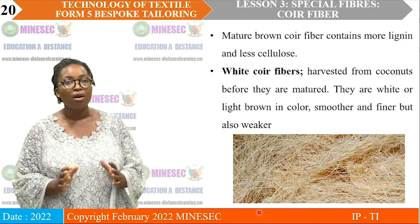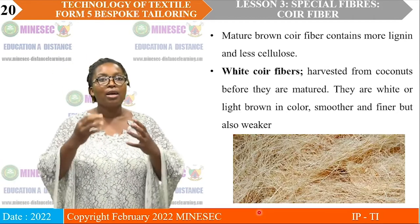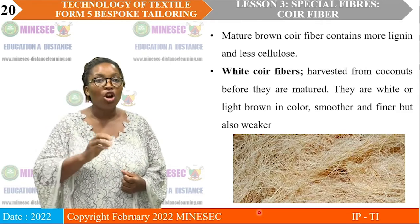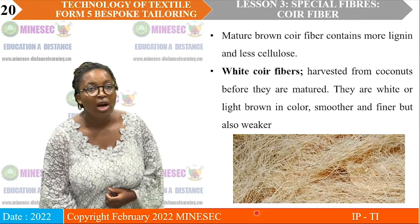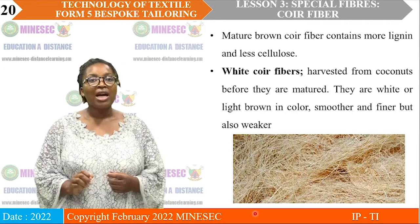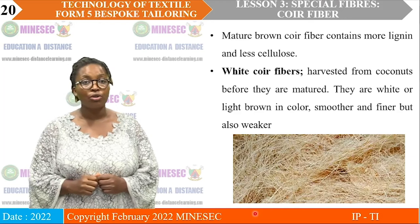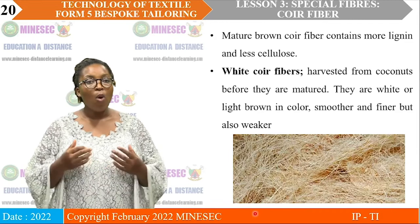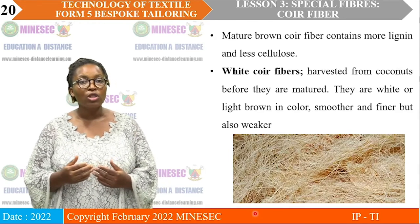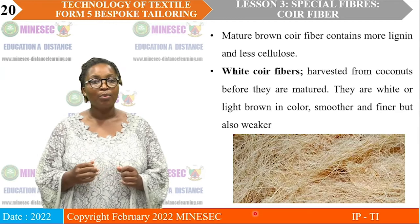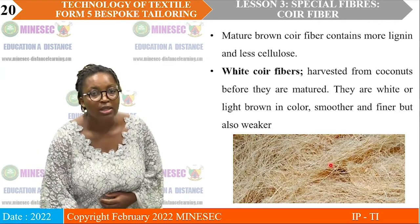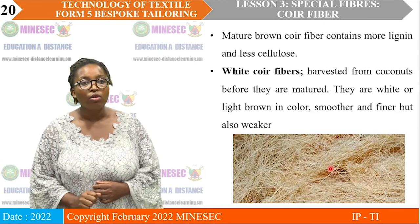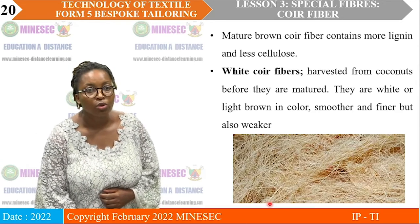We also have the white Koi, which is harvested from coconut before it is matured. Before it is ripe, we harvest it. The white Koi is white or light brown in color, smoother, finer, but also weaker. You can see from the color — this is whiter than the brown coconut fiber.